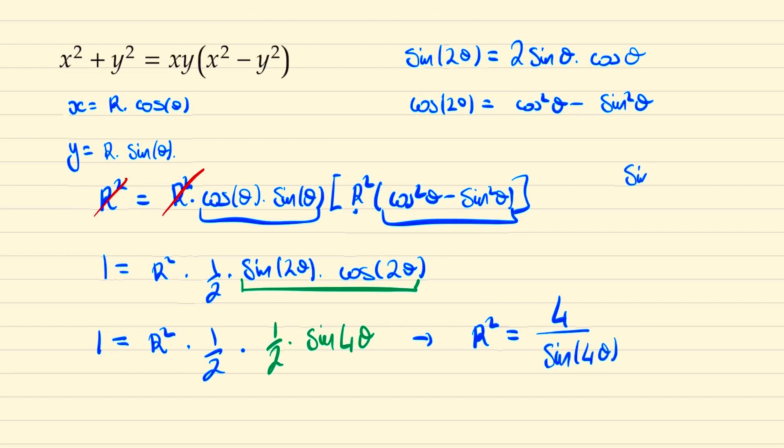But since we know that sine 4 theta is less than or equal to 1 for all values of theta, then it follows that the minimum of r squared must occur when the denominator is 1 or in other words r squared is 4. And we already noted earlier that r squared was the same as x squared plus y squared. And so thus the minimum value of x squared plus y squared is 4.